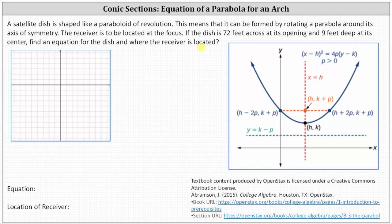We represent a slice of the satellite dish using a parabola that opens up as shown here on the right. And if we rotated the parabola about the axis of symmetry, it would give us the satellite dish.